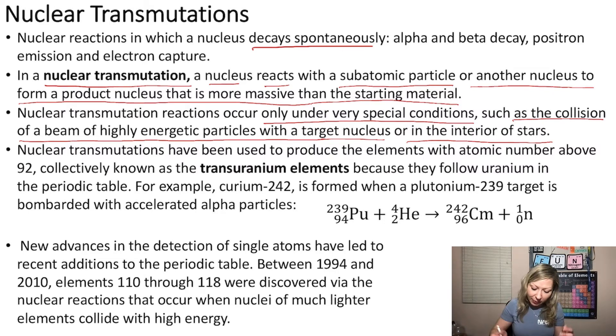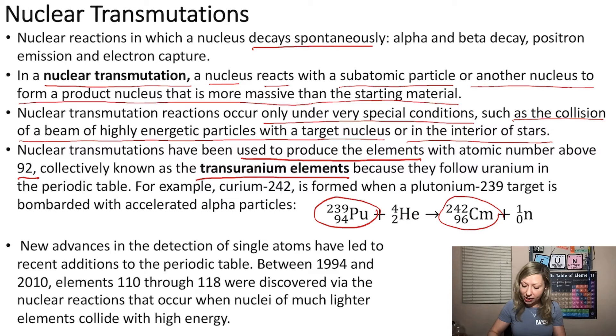Nuclear transmutations have been used to produce the elements with atomic numbers above 92, and these are known as transuranium elements because they are after uranium in the periodic table. For example, curium-242 was created using plutonium-239, which was bombarded by alpha particles.